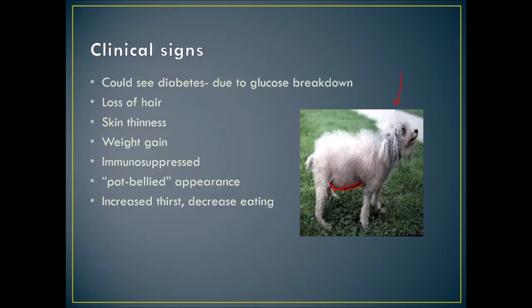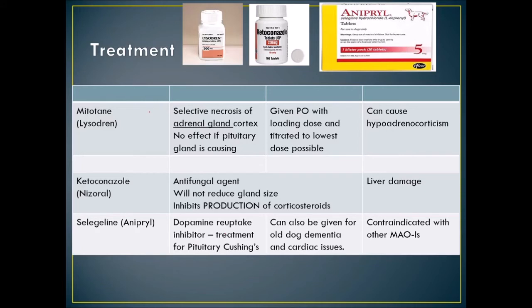Three treatments for Cushing's disease: mitotane — Lysodren — ketoconazole, also known as Nizoral, and selegiline — Anipryl. Mitotane causes selective necrosis of the adrenal cortex, reducing corticosteroid release. It requires a loading dose and then the lowest effective dose, because too much can cause hypoadrenocorticism. Ketoconazole is an antifungal that inhibits corticosteroid production without reducing gland size, but it can cause liver damage.